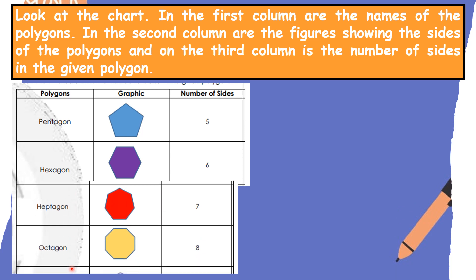Let's proceed to heptagon. Heptagon has seven sides. So, one, two, three, four, five, six, seven. Correct.